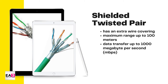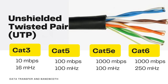STP, or the shielded twisted pair, provides better electromagnetic interference protection since it has an extra wire covering. It has a maximum range of 100 meters and transfers data up to 1000 megabytes per second, or one gigabyte per second. UTP, on the other hand, has different categories. Let us focus on Cat 3, Cat 5, Cat 5e, and Cat 6.